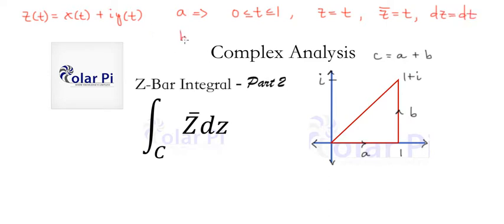Now on b, on this vertical line, we note that x is equal to 1 and then y is t this time. And just as before on a, along b, we're going to let t range from 0 to 1. So since x is 1 and y is t, z is going to be, and let me note that t is again going from 0 to 1, but z is going to be x, which is 1, plus iy, but y is t, so x plus it.